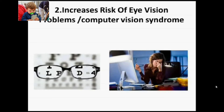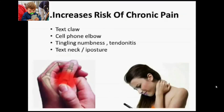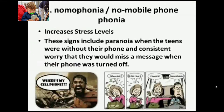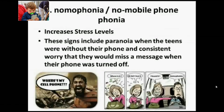The next disease caused by mobile radiation is an increased risk of chronic pain — text claw, cell phone elbow, tingling, numbness, and tendonitis. The last one in this group is text neck, caused by poor posture. Another condition is nomophobia — no-mobile-phone phobia — which increases stress levels.